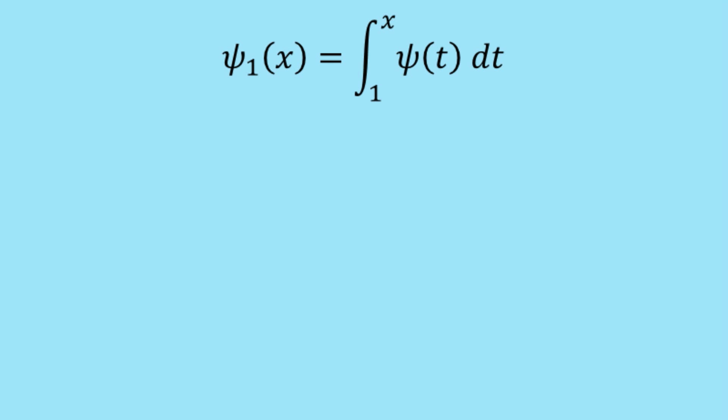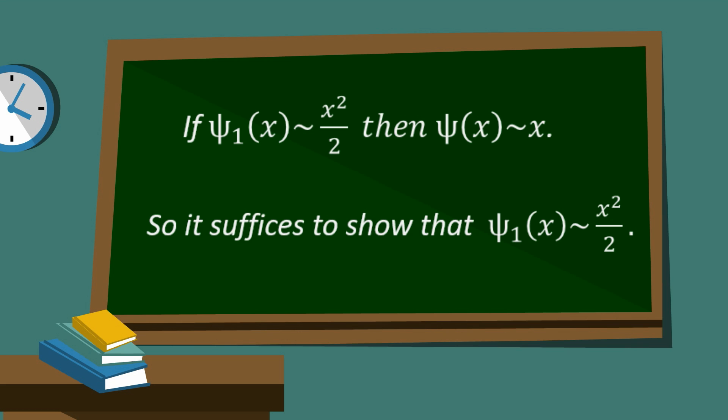So the third step of the proof is to show that if psi_1(x) is asymptotically equivalent to x squared on 2, then psi(x) is asymptotically equivalent to x. So having proven all these statements, it now suffices to show that psi_1(x) is asymptotically equivalent to x squared on 2.